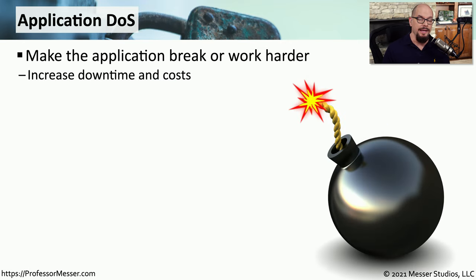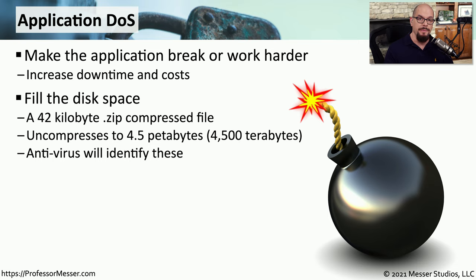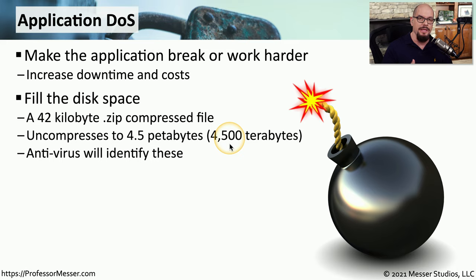If an application has a vulnerability, an attacker could take advantage of that to cause a denial of service. An example of an application denial of service would be something like a ZipBomb. A ZipBomb is a 42-kilobyte zip-compressed file — a relatively small file — but when you uncompress it, it expands to 4.5 petabytes, which is probably much larger than the available drive space in your computer. You could send somebody this zip file, ask them to uncompress it, and it will very quickly overwhelm the available storage on that system, creating a denial of service.